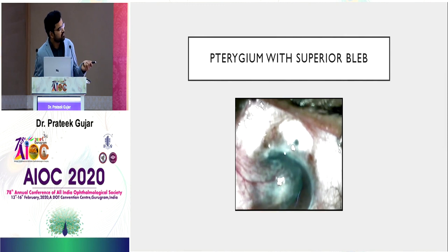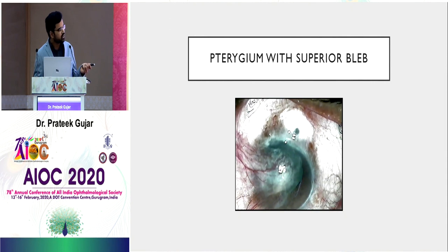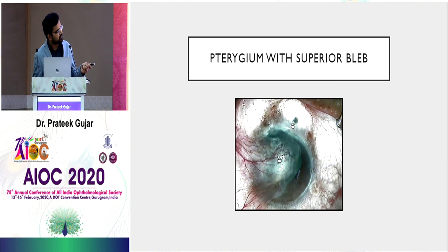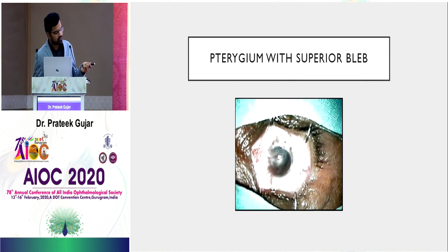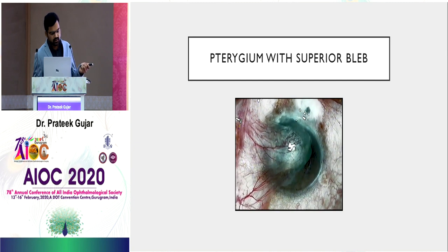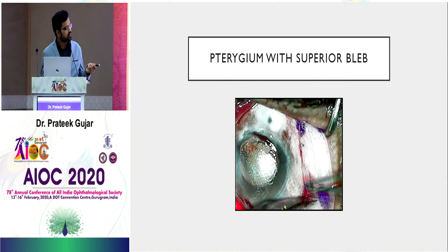For a large pterygium with a superior bleb: you cannot touch the superior conjunctiva, so conjunctiva is taken from the temporal part instead. In this case it is secured with sutures rather than glue.